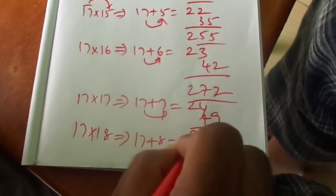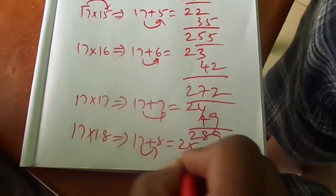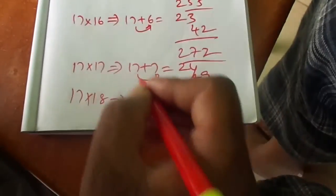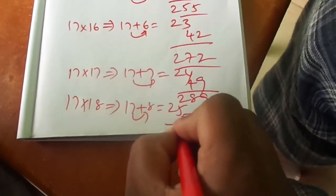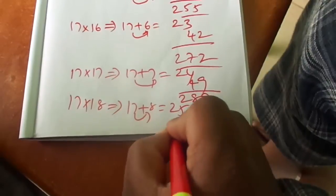17 18s: 17 plus 8 is 25. 7 eights are 56. Total is 306.